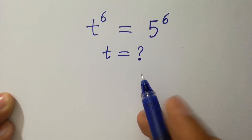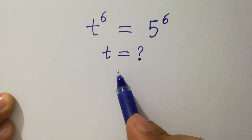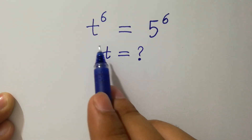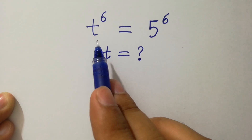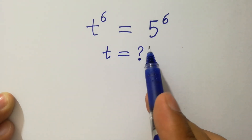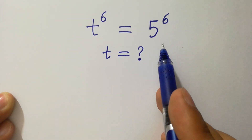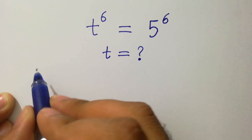Hello friends. Find the value of t if t to the power 6 equals 5 to the power 6. Let's have a solution.